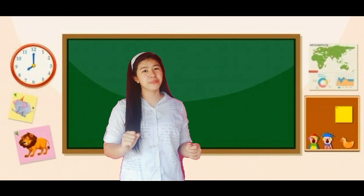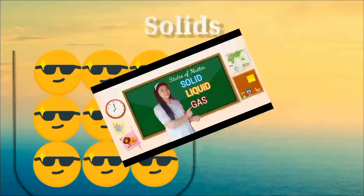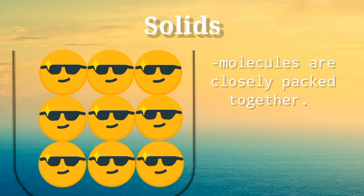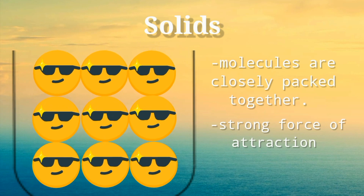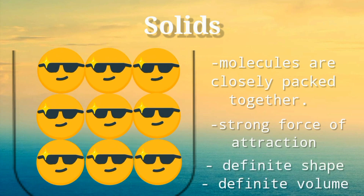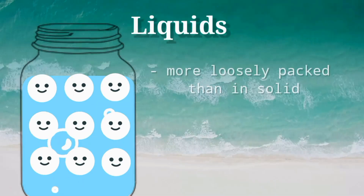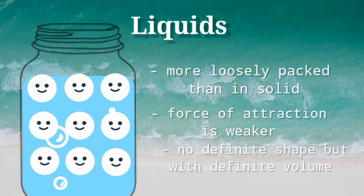There are three states of matter. In the solid state, the molecules of matter are closely packed together, so the molecules hold each other very tightly, which causes a strong force of attraction between them. That's why solid has a definite shape and volume. In the liquid state, the molecules are more loosely packed than in solid, so the force of attraction is weaker compared to solid, making liquid have an indefinite shape but with a definite volume. That's why liquid takes up the shape of its container.